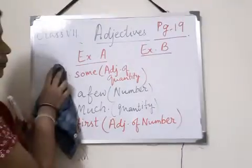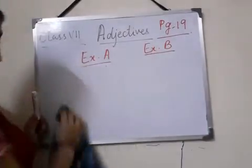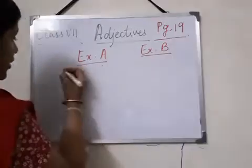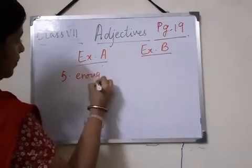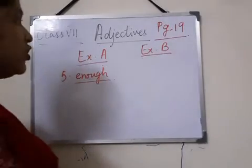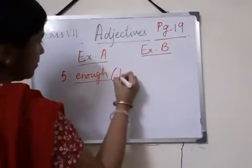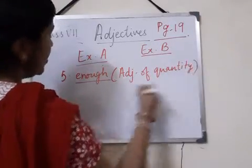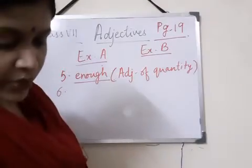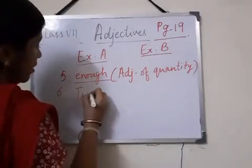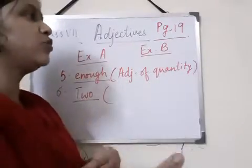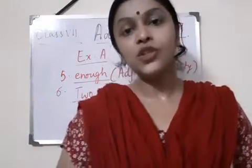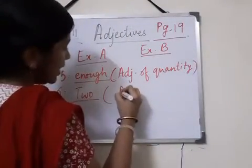Let us solve a few more. Number 5: She has dash money to visit Mumbai — it will be 'enough.' She has enough money, adjective of quantity, because we are not specifying the amount. Number 6: Dash students were chosen for the lead roles in the play — it will be '2,' because for a lead role in a drama we choose very few students, so just 2. That is also adjective of number, cardinal.